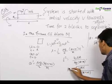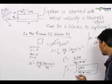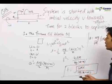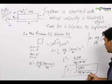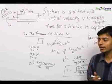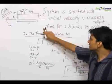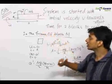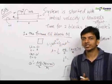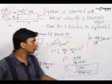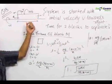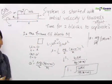So the time taken for the upper block to leave the lower block is t equals root of 4ML / [mu g (M plus m)]. We obtained this result quite easily by working in the reference frame of the lower block, compared to how difficult it would have been in the ground frame. It is always better to solve such questions in the reference frame of one of the objects.